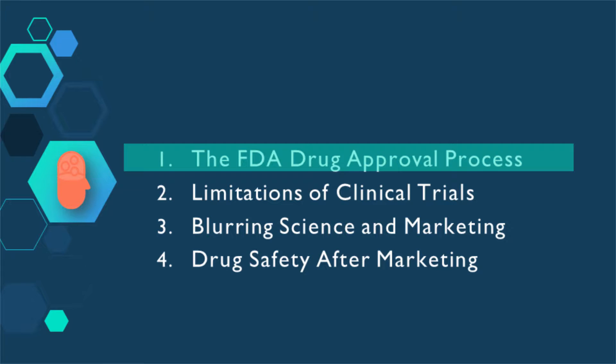FDA drug approval involves a lengthy process of multiple study phases. It can take up to 10 years and hundreds of millions of dollars to synthesize a new chemical and bring it to market as a medication. This section covers four key study phases that provide most of the information we know about a drug when it is brought to market.